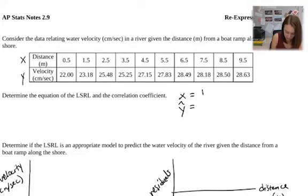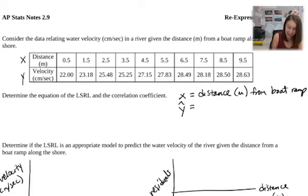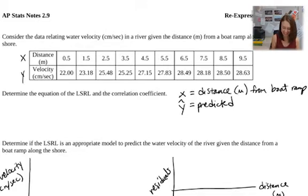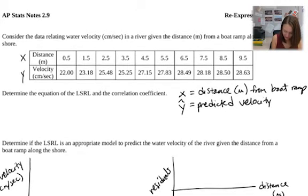Before finding the least squares regression line, I want to define my variables. x is going to be distance in meters from the boat ramp. And y-hat — remember when we write our least squares regression line, it's y-hat, not y equals. The hat means you're predicting — like a wizard hat. y-hat is the predicted velocity of water in centimeters per second.